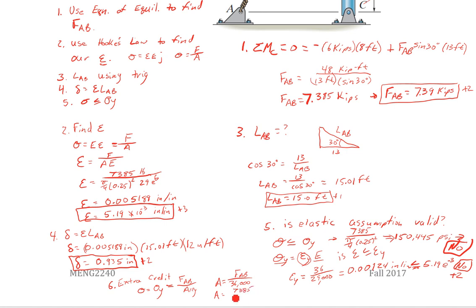So A equals 7,385 over 36,000. So A needs to be 0.2051 inches squared. If we do the math there, our diameter needs to equal 0.51107 inches. And since we need the minimum diameter, if we put 0.511 we would end up with a stress slightly over yield, so D equals 0.512 inches. And that would get us plus 2 extra credit.